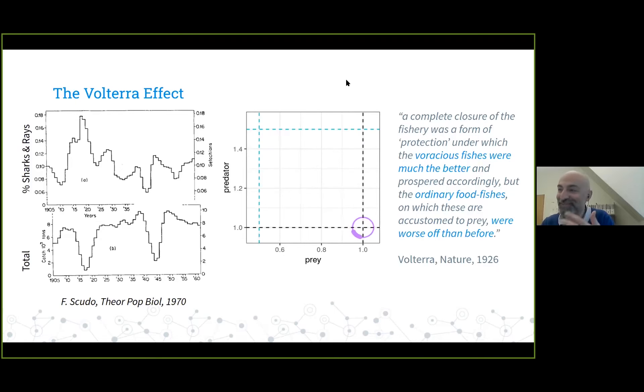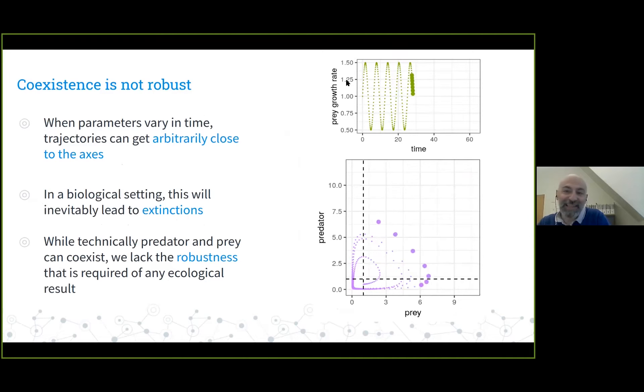That's what we call the Volterra effect. Now there is one big problem with these equations if you're an ecologist. Imagine that instead of having a constant growth rate for the prey, we have prey that grow faster during the summer and slower during the winter, some sort of sinusoidal growth rate at the top graph. What happens to the trajectories of the predators and the prey? These trajectories shave the axis zero-zero very, very closely. Because these dynamics are slower when we're close to zero, they sit at the zero place for a very long time, which means biologically these species would go extinct. Mathematically we could have a small fraction of a predator, but practically we cannot. This result really lacks robust coexistence.